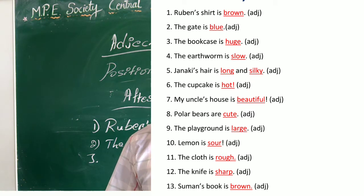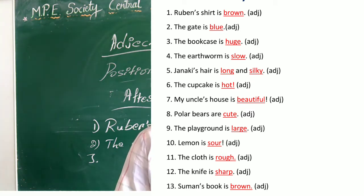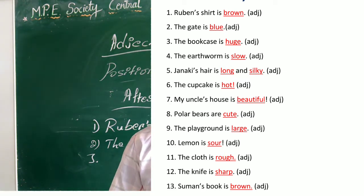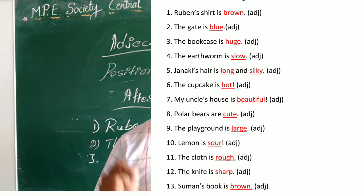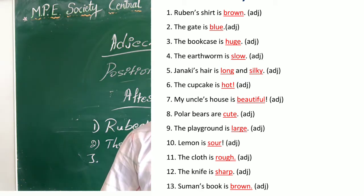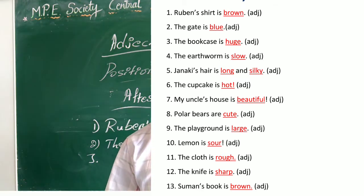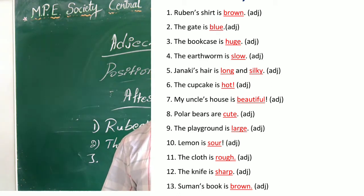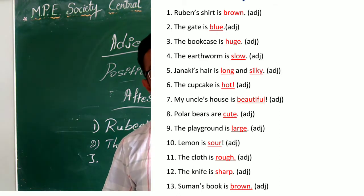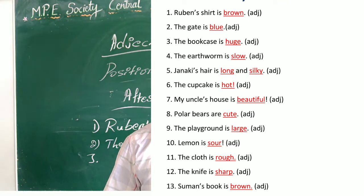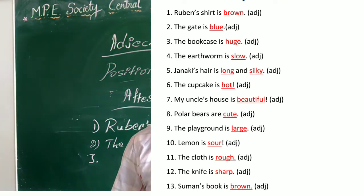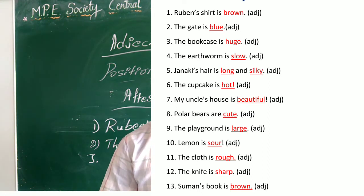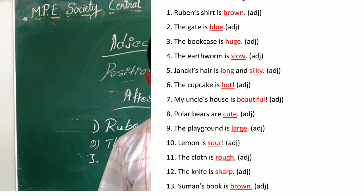Seventh sentence: 'My uncle's house is beautiful.' Beautiful is an adjective, but we use it after the verb, so you can underline 'beautiful.' Eighth sentence: 'Polar bears are cute.' 'Are' is the verb, and cute is an adjective. We use cute after the verb, so you can underline it. Ninth sentence: 'The playground is large.' Large is an adjective and we use it after the verb.